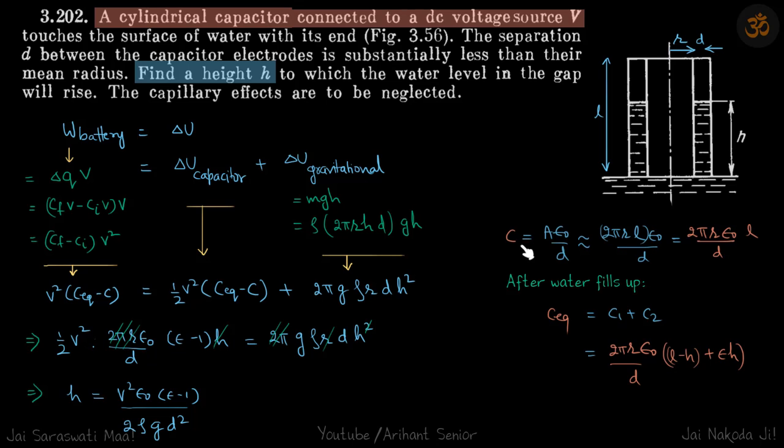C can be written for a cylindrical capacitor, can be assumed as A epsilon0 by d. A is the lateral surface area which is 2 pi r L, and which gives C as this. Once the water fills up, there will be two capacitors both in parallel.